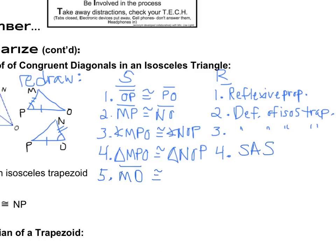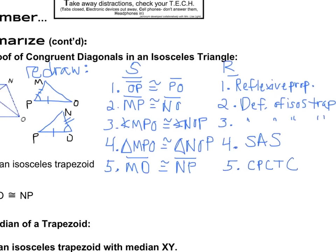And then we can finally conclude what we were asked to prove to begin with, which is that MO is congruent to NP. And of course, since we've already proved the triangle's congruent, our reason is CPCTC.